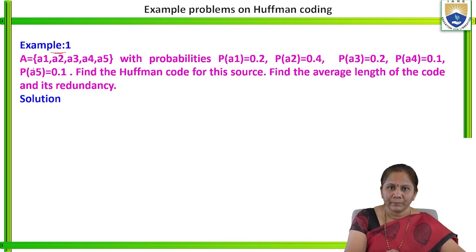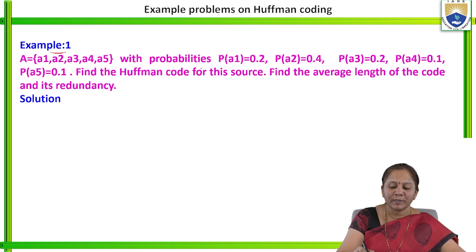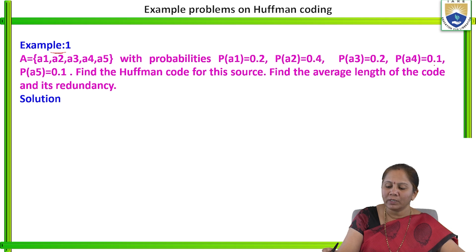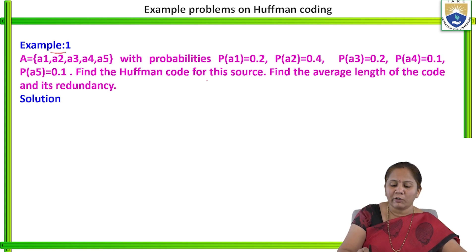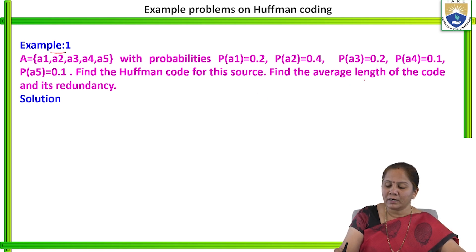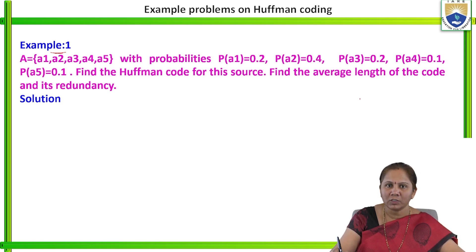Here, symbols A1, A2, A3, A4, and A5 are given with their respective probabilities: P(A1) = 0.2, P(A2) = 0.4, P(A3) = 0.2, P(A4) = 0.1, and P(A5) = 0.1. We have to find the Huffman code for this source, and also find the average length of the code and its redundancy.